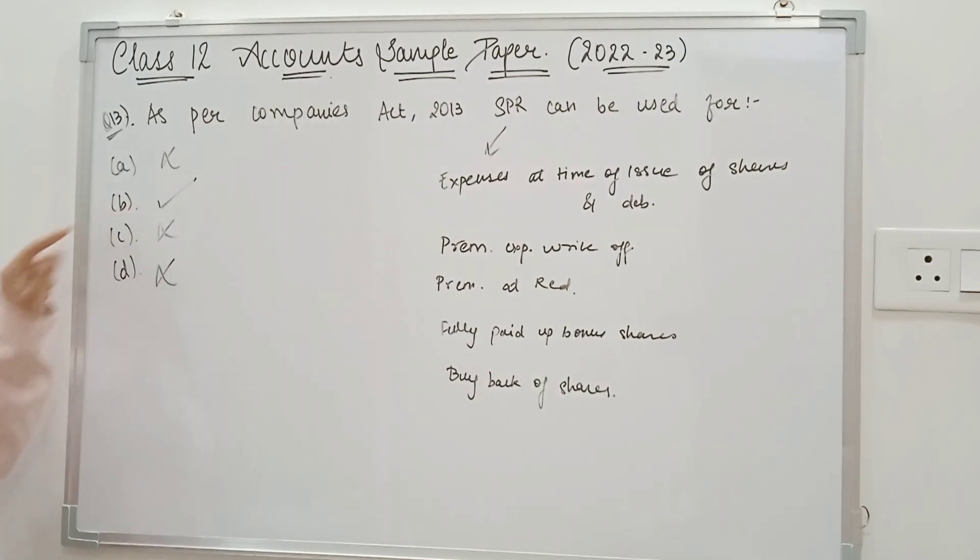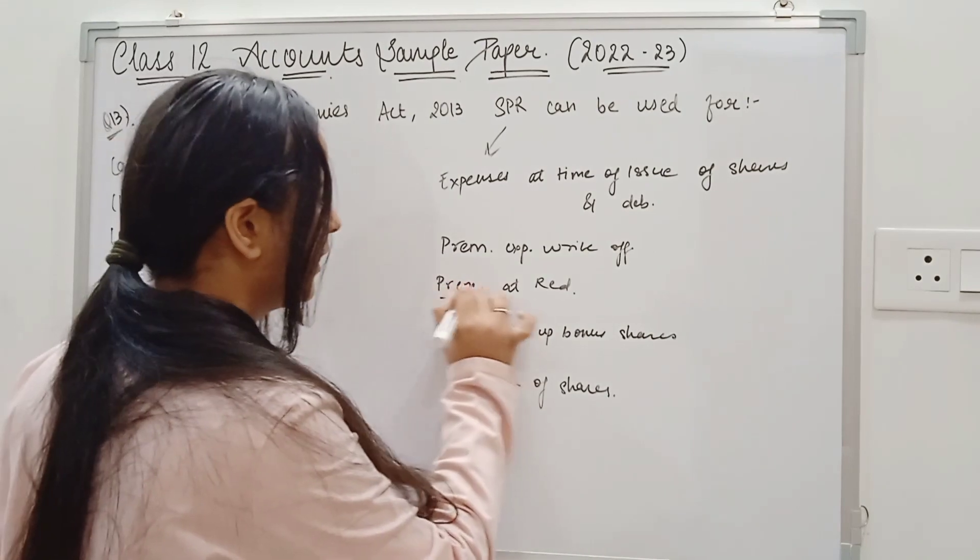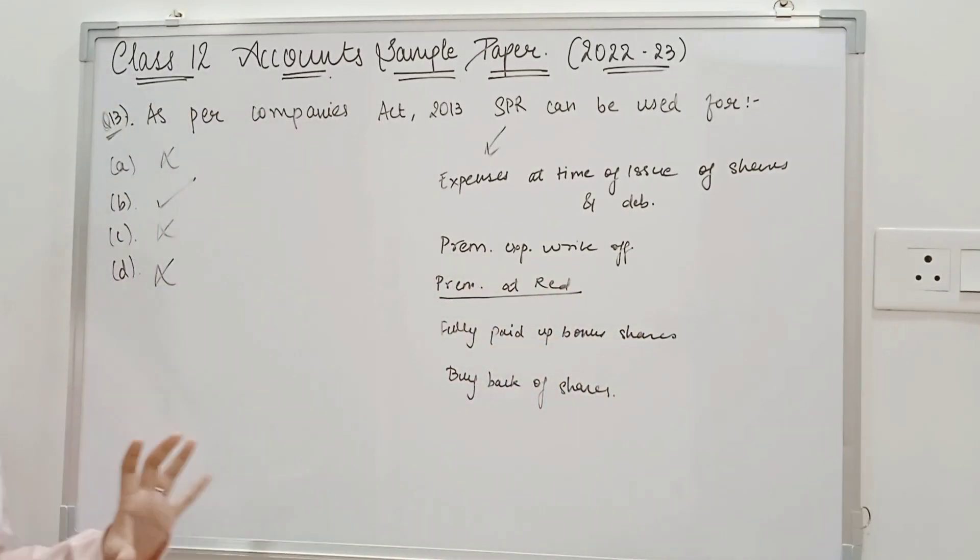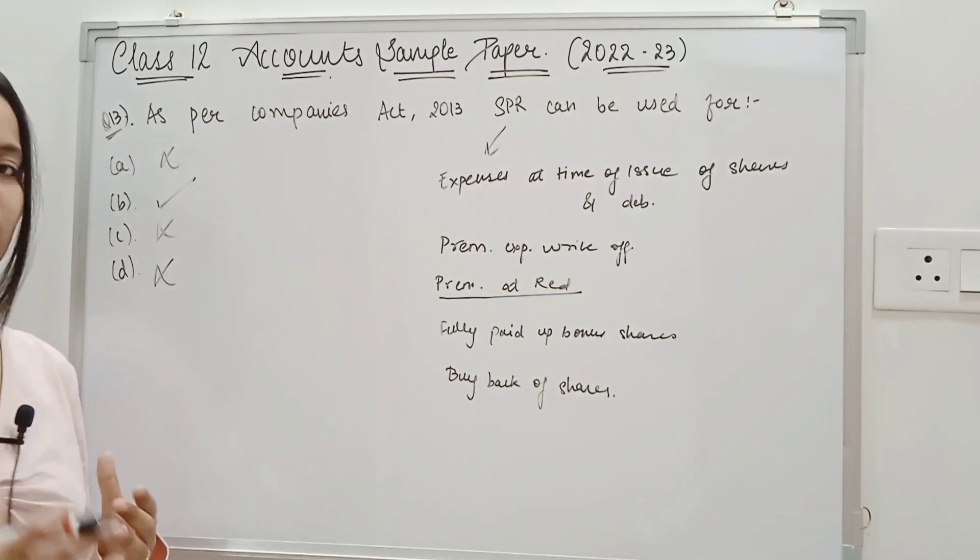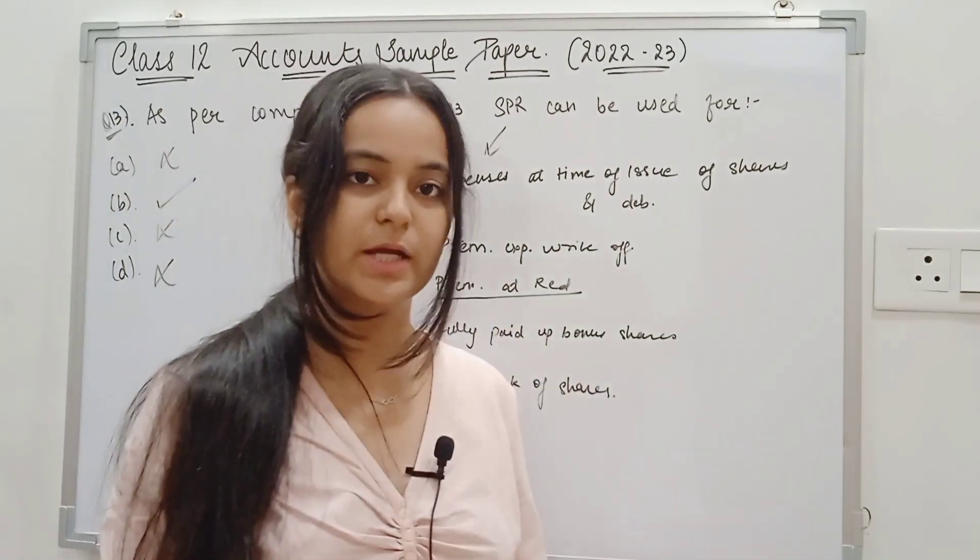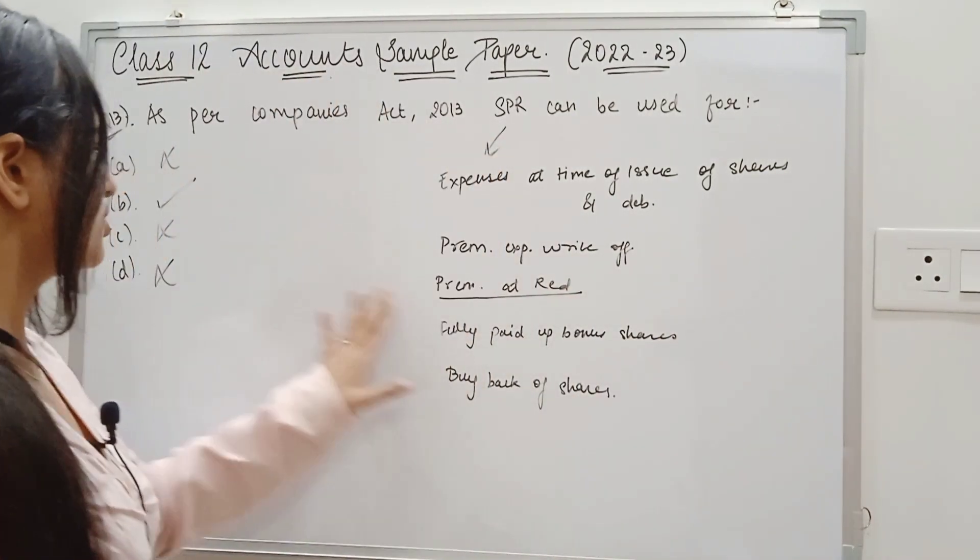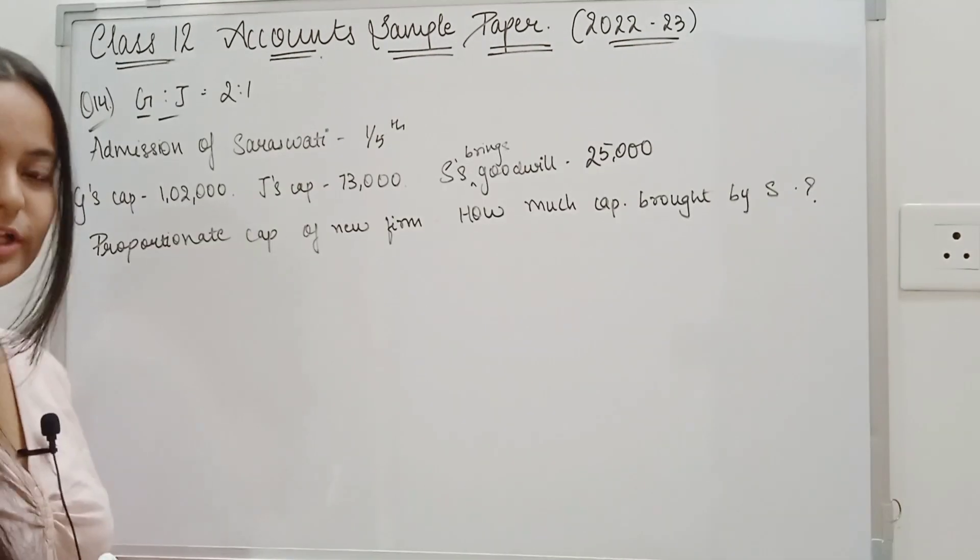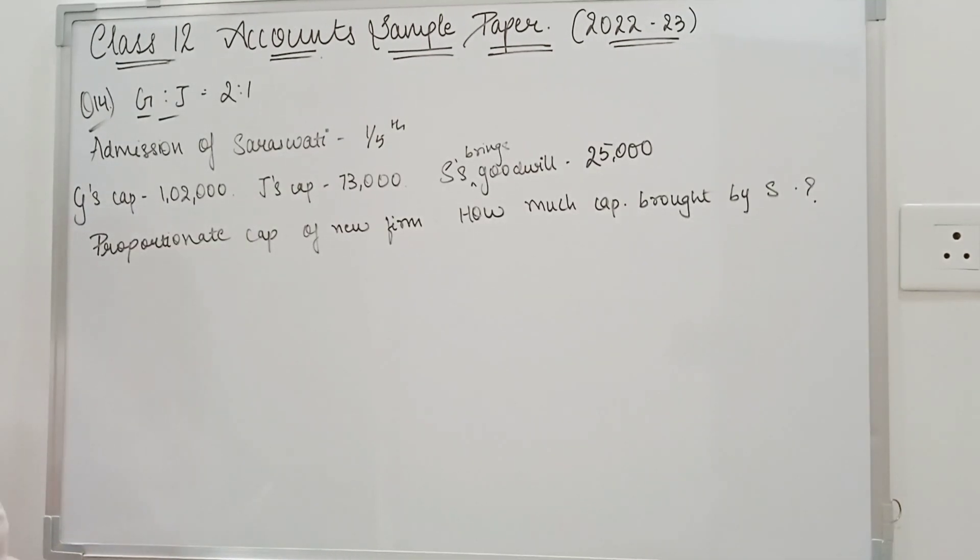And here, option B is correct. Because it is written here, premium at redemption of debentures, which is the correct option. When we redeem debentures, we have to give premium. So we can use SPR. So option B is the correct answer. Now we will do question number 14 of account sample question paper.